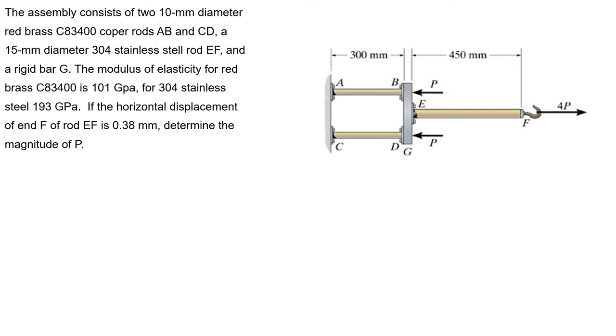Hello guys, this is the fourth problem of homework 5. The assembly consists of two 10 mm diameter red brass C83400 copper rods AB and CD, a 15 mm diameter 304 stainless steel rod EF, and a rigid bar G. The modulus of elasticity for the red brass C83400 is 101 gigapascals, for 304 stainless steel is 193 gigapascals. If the horizontal displacement of end F of rod EF is 0.38 mm, determine the magnitude of P.